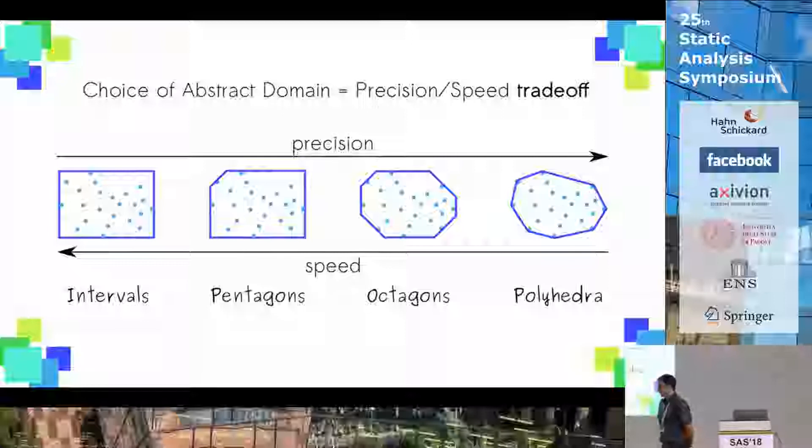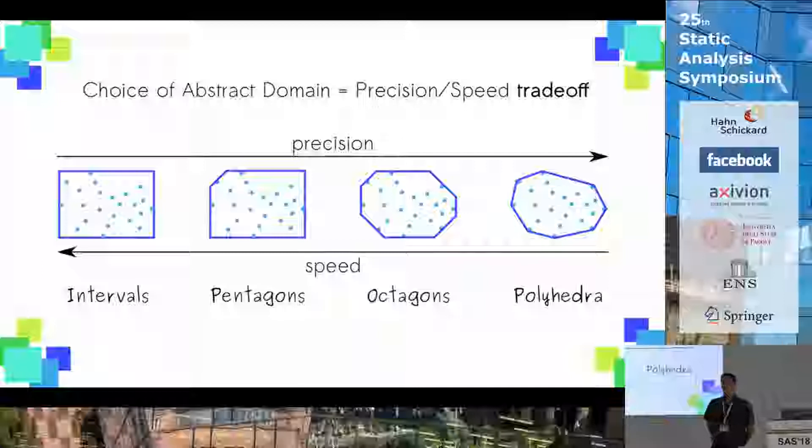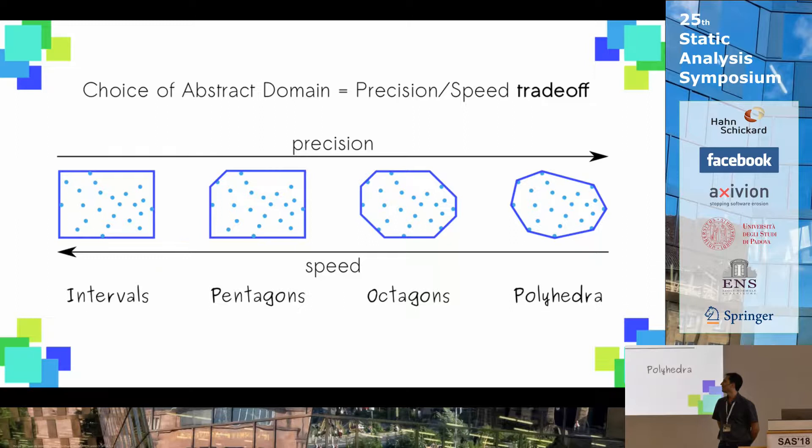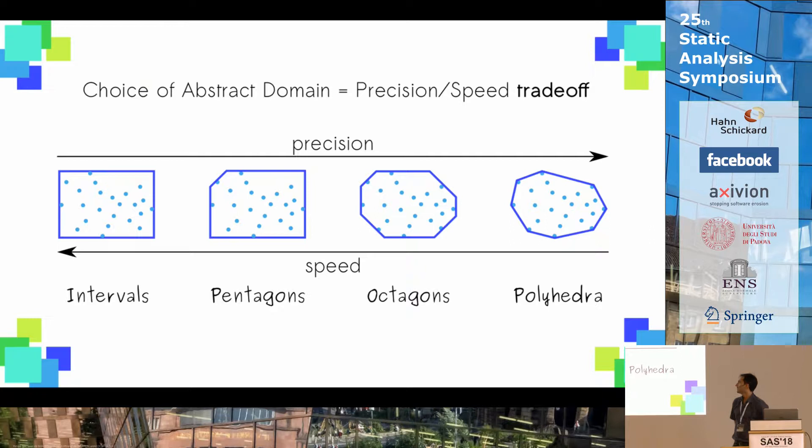When dealing with abstract interpretation, we must choose an abstract domain for our analysis, and different domains encode a different speed versus precision trade-off. For instance, the interval abstraction is known to be very fast, but also not as precise as the poly-abstract domain. In turn, the latter has the disadvantage of being exponential in the worst case in its cost.